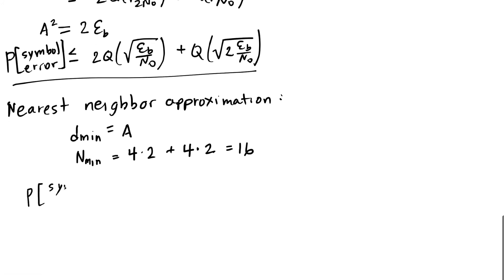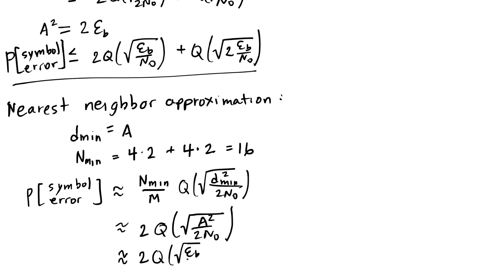And so my nearest neighbor approximation is nmin divided by m times the Q function with the square root of dmin squared divided by 2n0. Here we have 16 over 8, so we have 2 times the Q function. The distance is a, which we can write a squared as 2Eb, and we'll get this simplified version that is the same as the one we derived for the union bound.